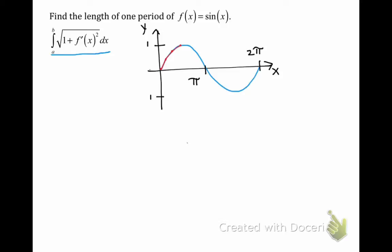Next, we need to determine our limits of integration. f of x equals sine of x is a periodic function, and the length of one period is 2 pi. Then the graph will repeat every 2 pi units. So we're going to use a equals zero as our lower limit of integration, and b is equal to 2 pi as our upper limit.